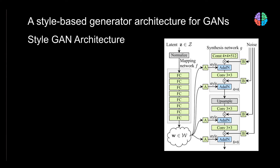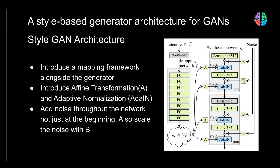Now let's look at the StyleGAN architecture. The main contribution is the mapping network, which takes the latent vector Z as input and maps it to another vector W. The second contribution is the affine transformation A and adaptive normalization AdaIN. The third contribution is noise vectors with transformations B, passed at four different stages of the convolution layers, unlike standard GANs where only one input noise vector is provided.